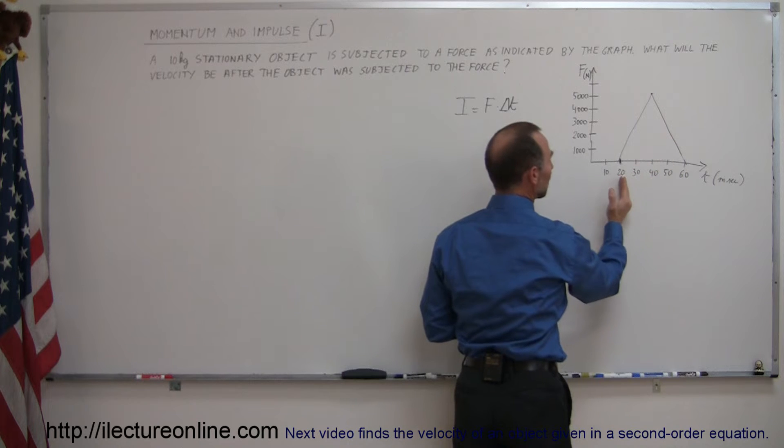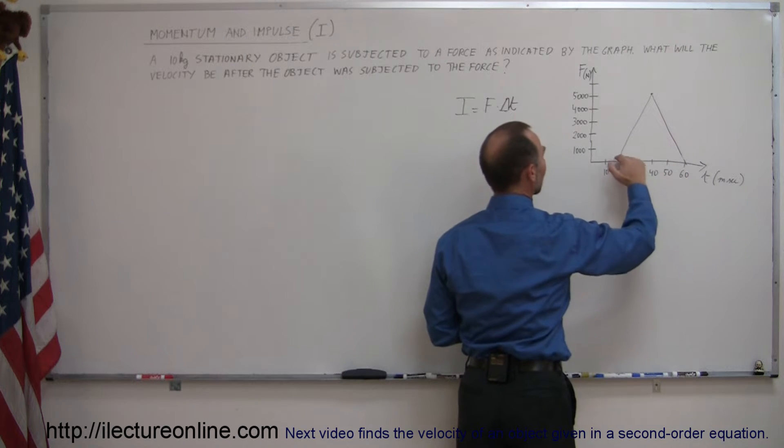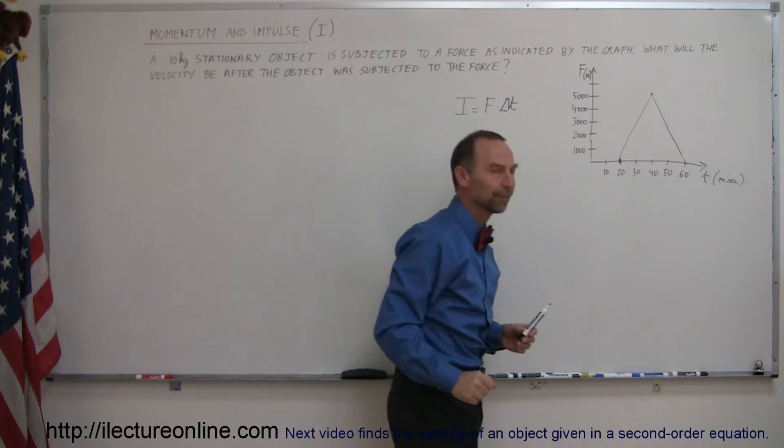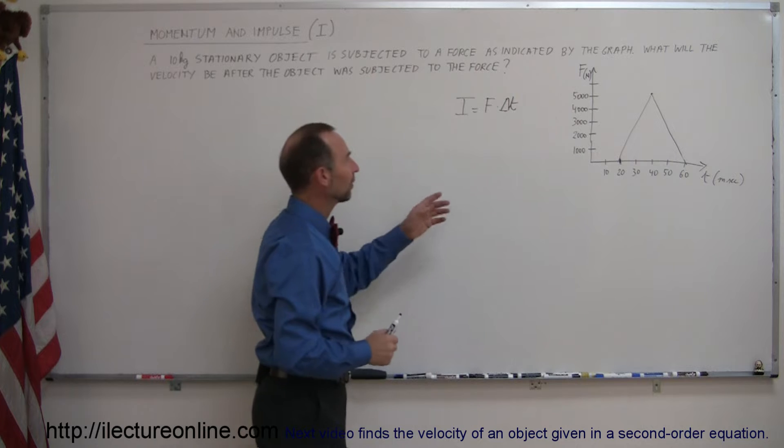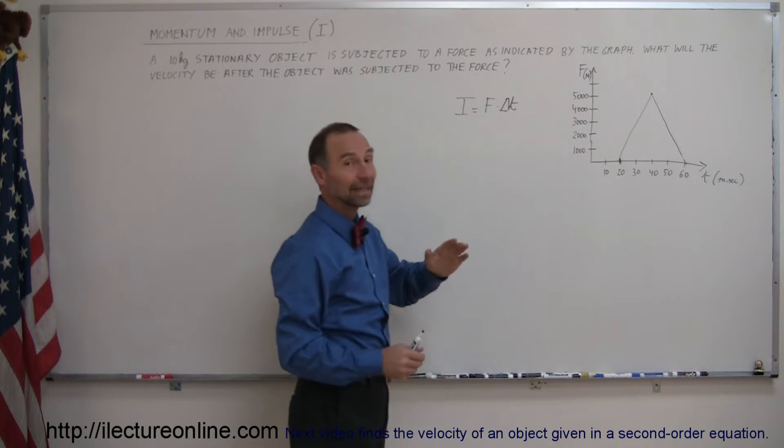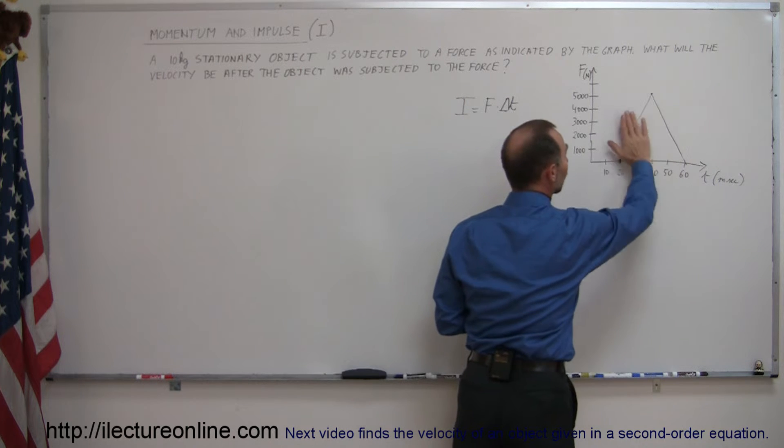It starts at 20 milliseconds, it ends at 60 milliseconds and the force gets all the way up to 5,000 newtons before it comes back down to zero. And it turns out that this impulse is equal to the product of the force times delta t, that is the same as saying it's the area underneath this curve.